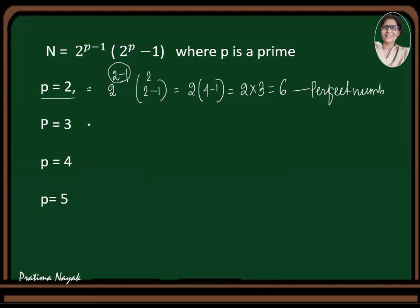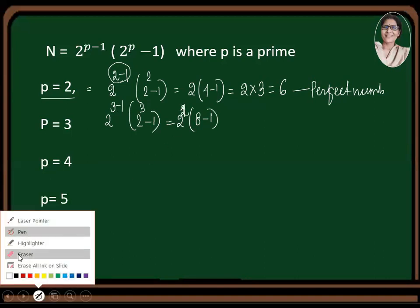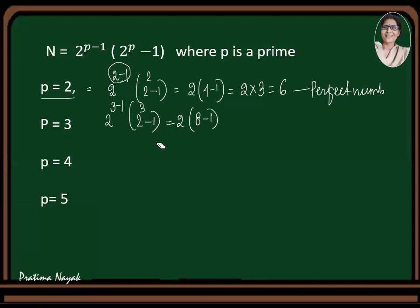Next is p equals 3. So 2 to the power 3 minus 1, multiplied by 2 to the power 3 minus 1 here. So 2 to the power 3 minus 1 is 2 to the power 2. And 2 to the power 3 is your 8, 8 minus 1 is 7. So this will be 4, multiplied by your 7, which is 28. 28 is the next perfect number.